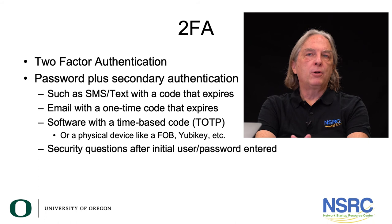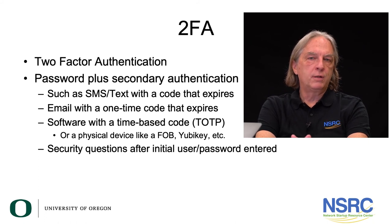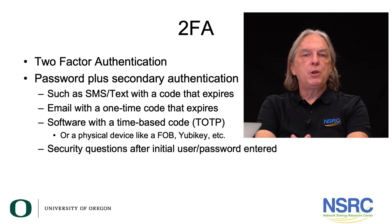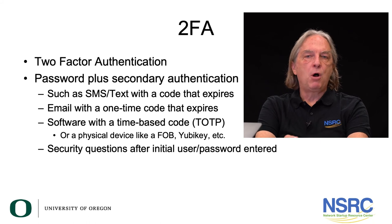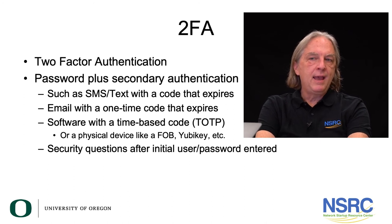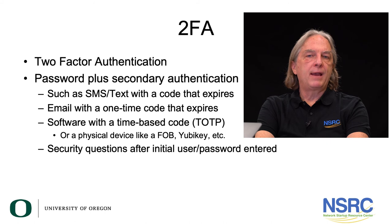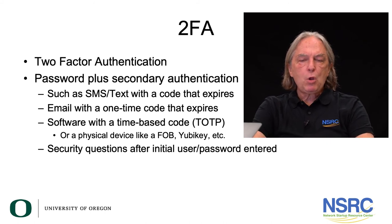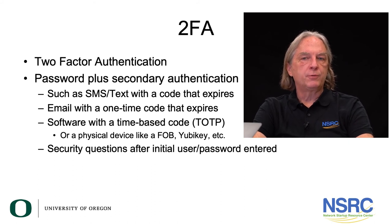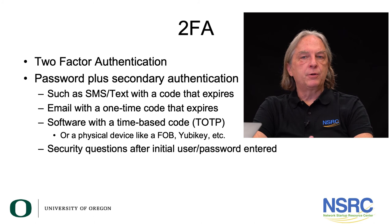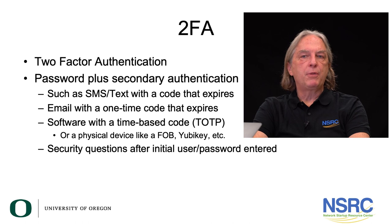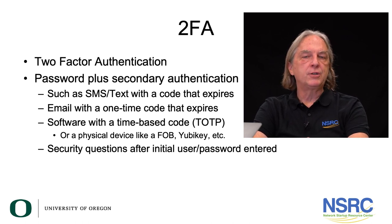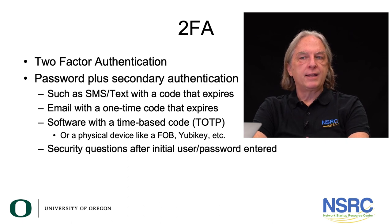Becoming more and more popular is software that provides a one-time code using a protocol called TOTP. This is where you have devices called FOBs — small devices you carry that generate a six-digit code that changes every 30 seconds or every minute. When you first set up your service, you likely scanned a QR code into some software on your cell phone. This QR code contains a mathematical algorithm specific to that particular service, allowing both ends to generate the same random six-digit code and change it every 60 seconds.